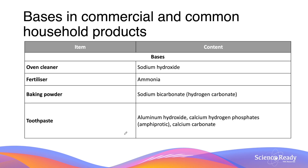These are bases in common and commercial household products. Oven cleaner contains sodium hydroxide. Fertilizers contain ammonia. Baking powder contains sodium carbonate. Toothpaste contains a range of bases including aluminium hydroxide, calcium hydrogen phosphate, which is amphiprotic, and calcium carbonate.